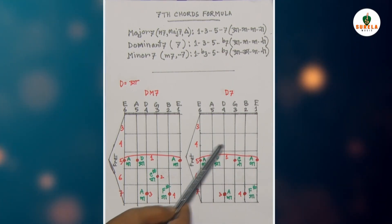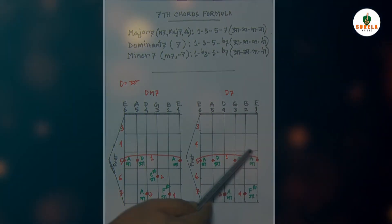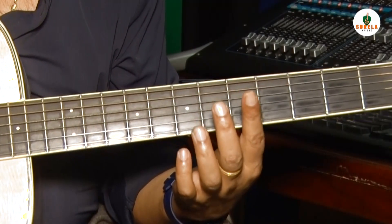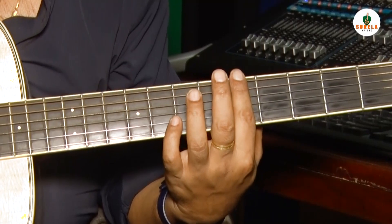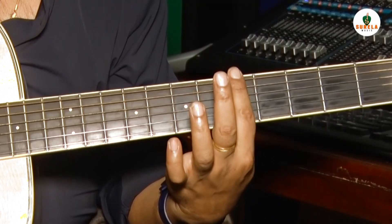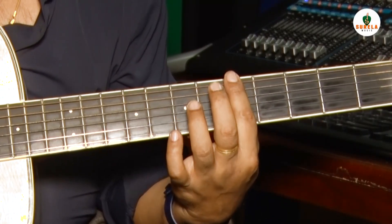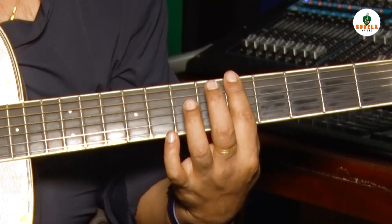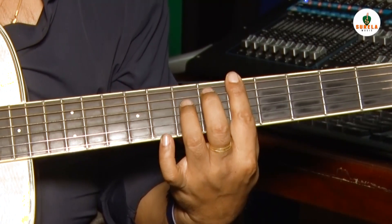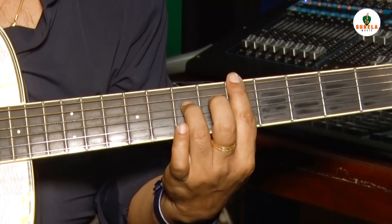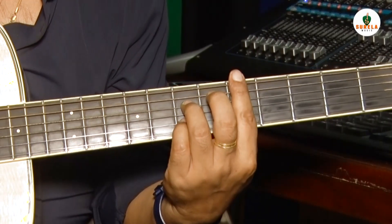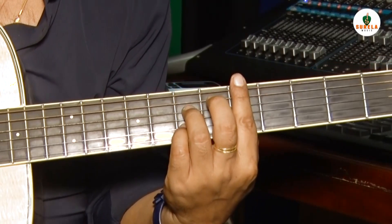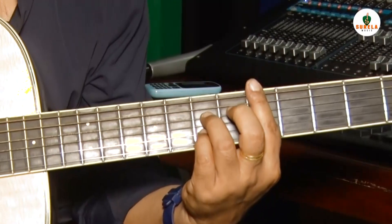D dominant 7th chord। 1st finger D, 5th fret — এভাবে ধরতে হবে। 4th string, 7th fret, 3rd finger। 2nd string, 7th fret, 4th finger। এটাই হচ্ছে D dominant 7th chord।